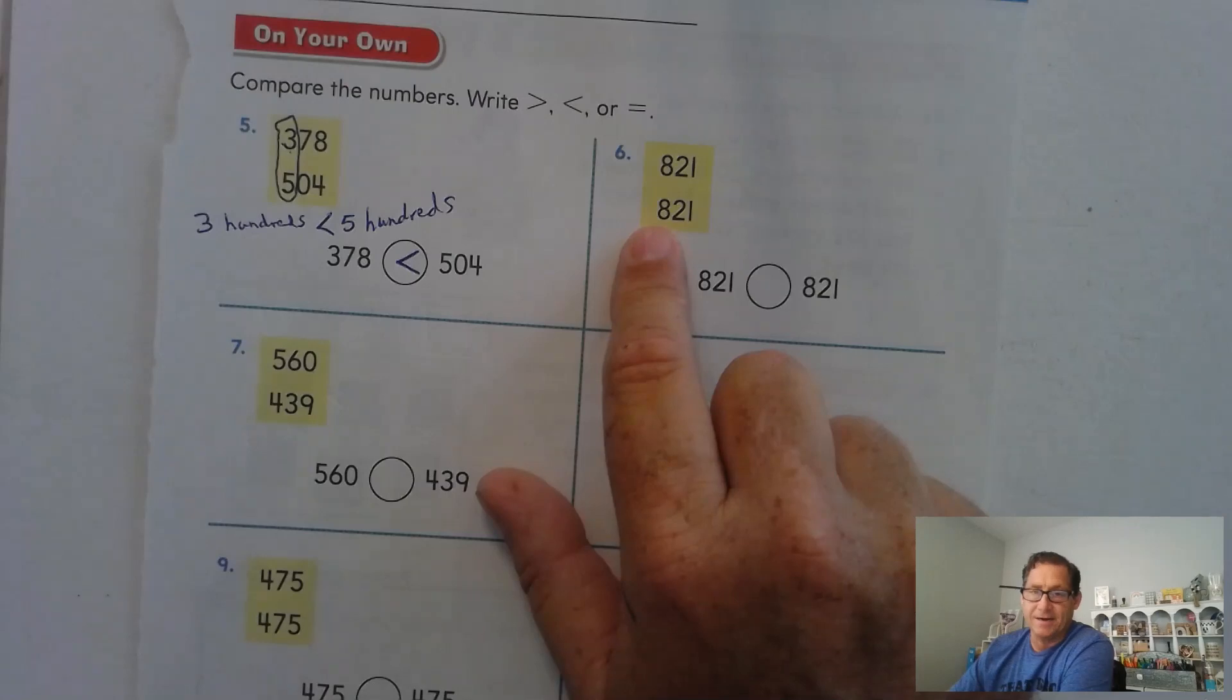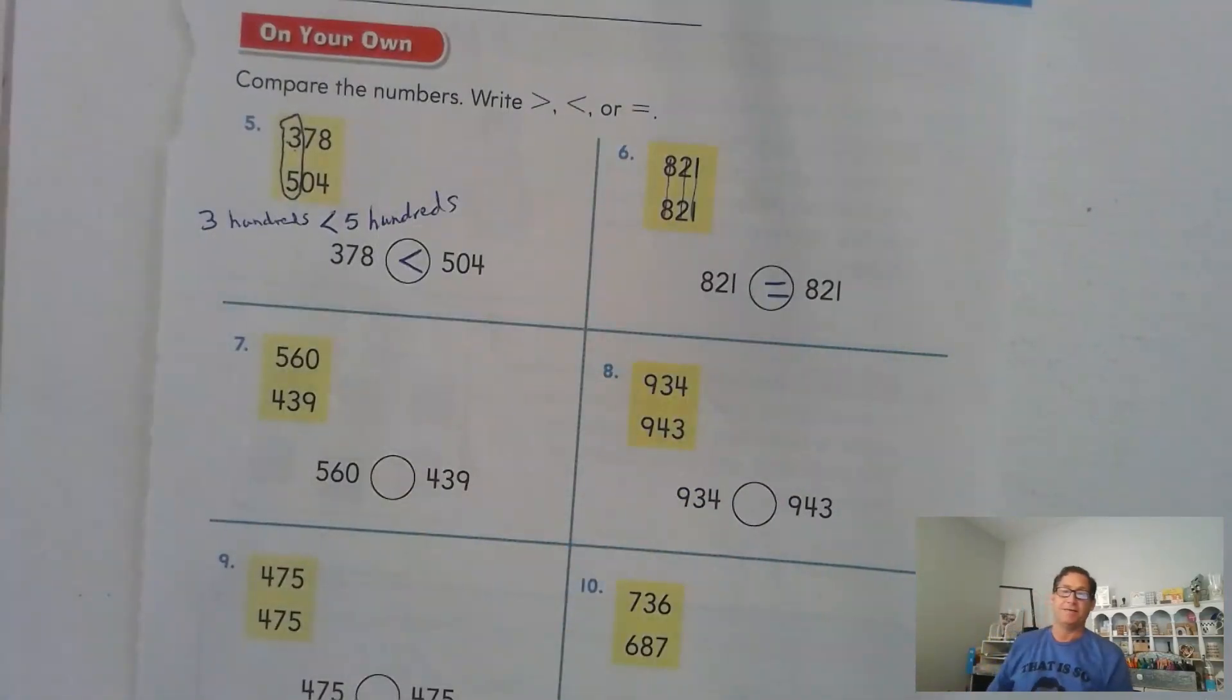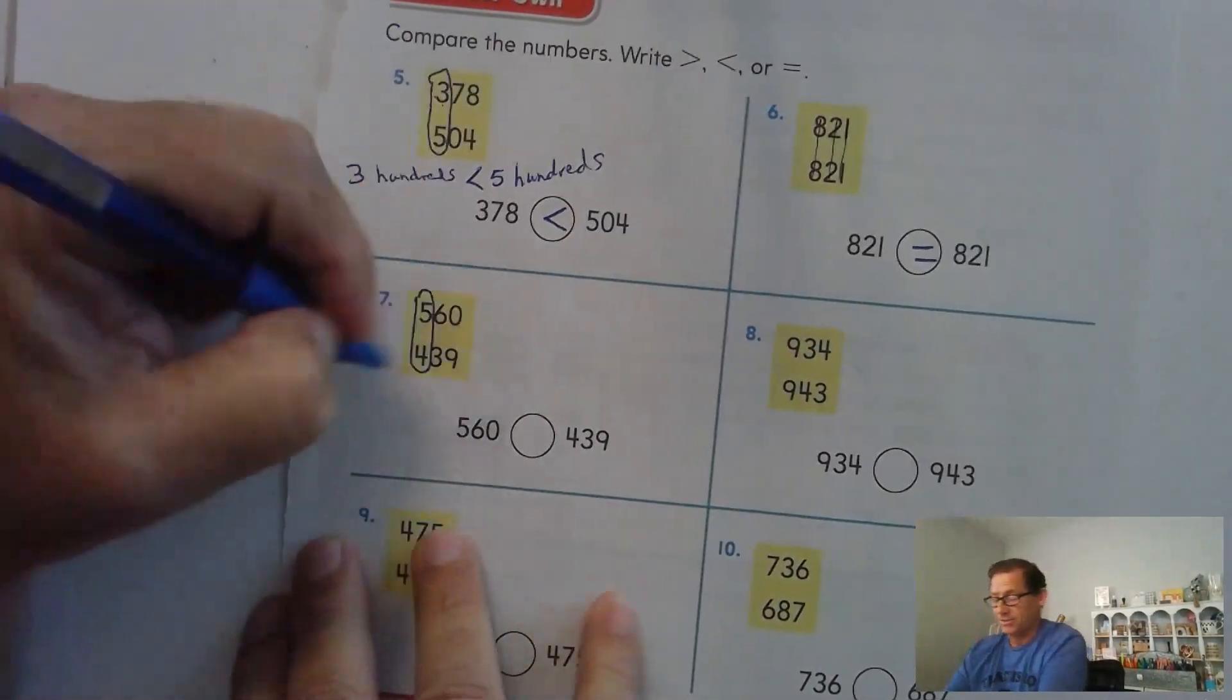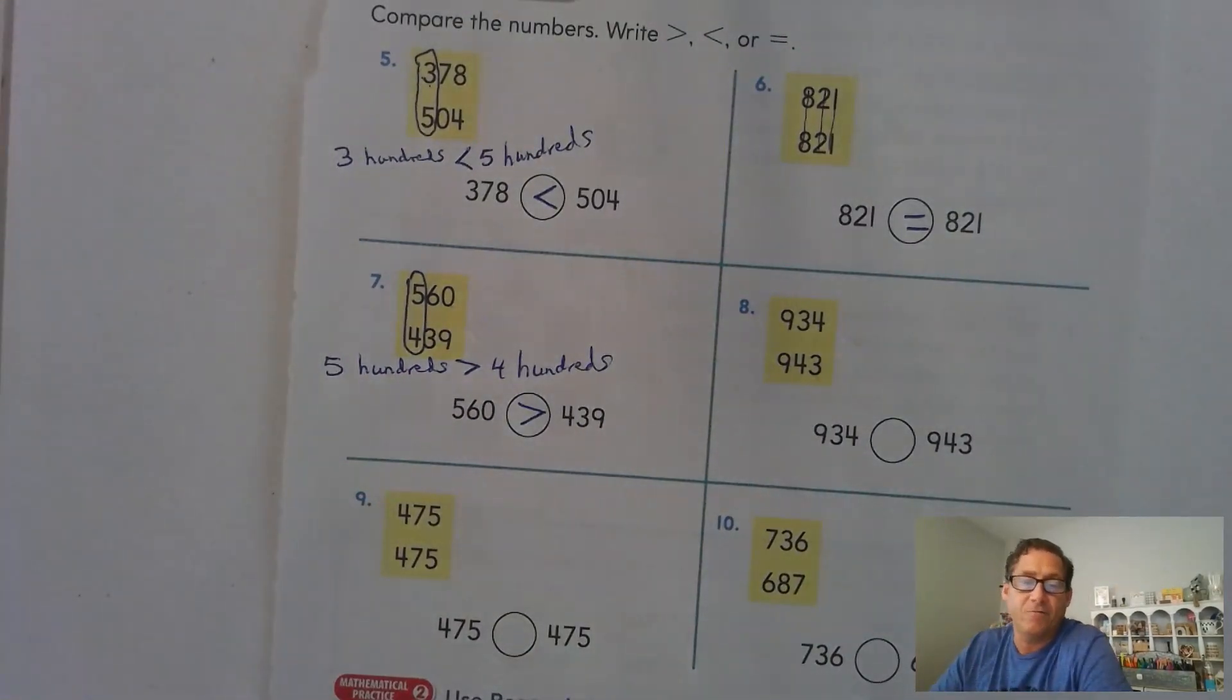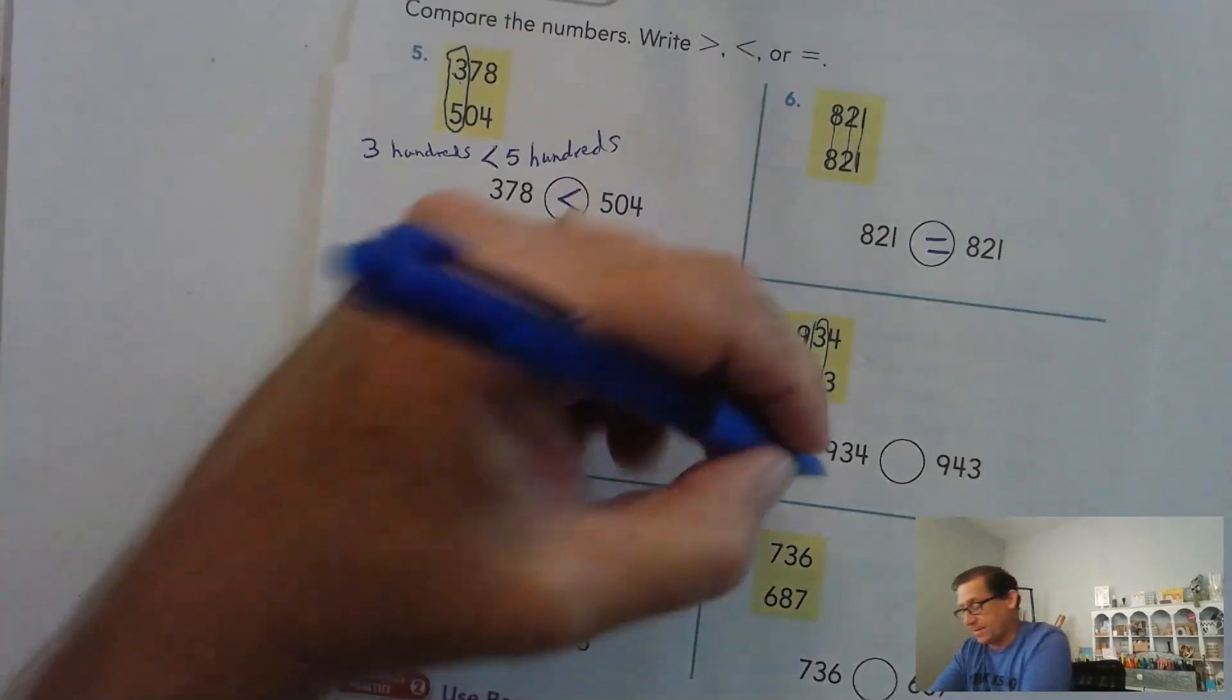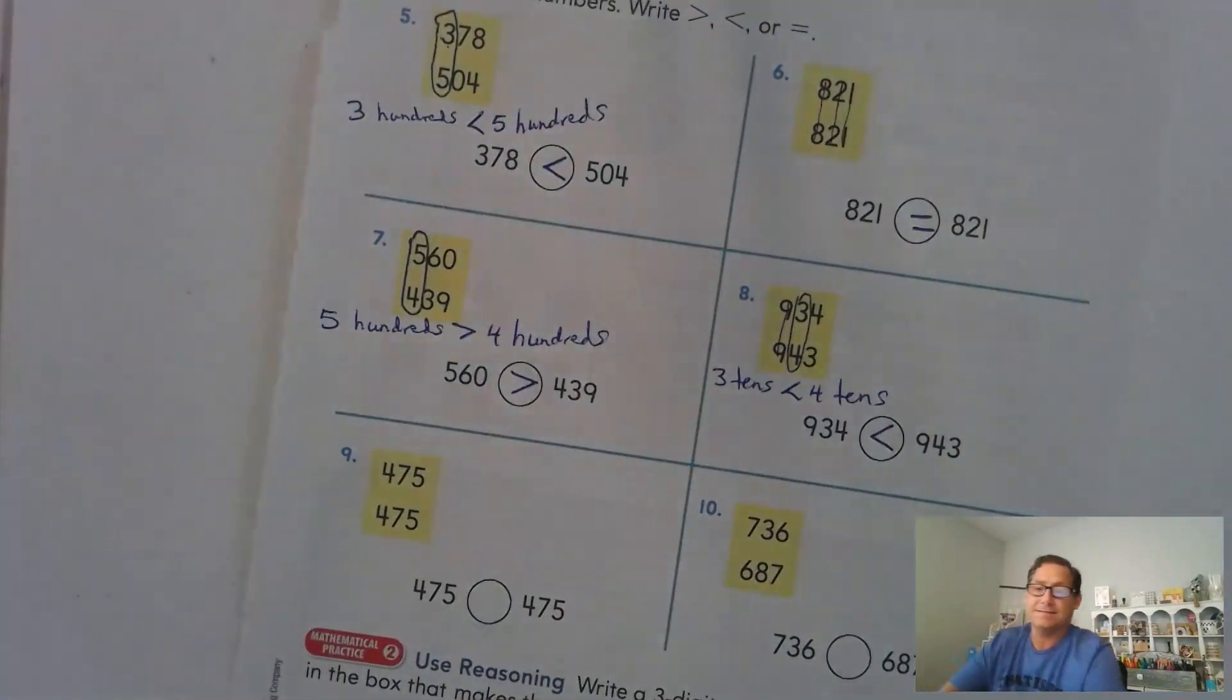821 compared to 821. Well, the hundreds are the same. The twos, tens, are the same. The ones are the same. So that number is clearly equal. 560 compared to 439. Well, we can compare just the hundreds because 500 is greater than 400. 934, 943. The 900s are the same, but the tens are different. 3 tens is less than 4 tens. So 934 is less than 943.